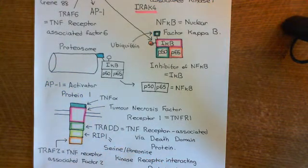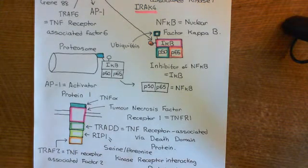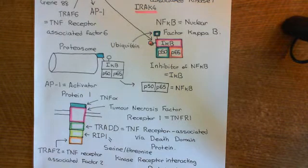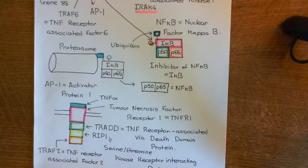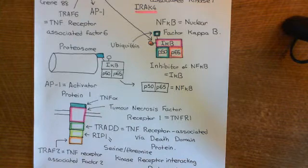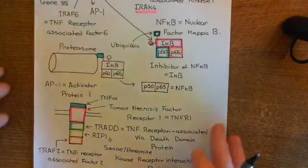Overall, tumor necrosis factor alpha and interleukin-1 binding to receptors on the surface of endothelial cells leads to the activation of two transcription factors within those endothelial cells: the AP1 transcription factor, the activator protein 1, and also the NF-kappa B transcription factor, the nuclear factor kappa B.